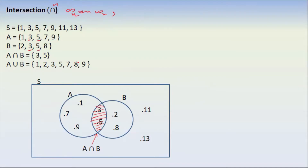The set of union is one. The set of union are the same. The two, three, one, five. 7, 8, 9. 1, 2, 3, 5, 7, 8, 9. This is the union.